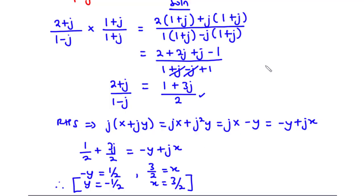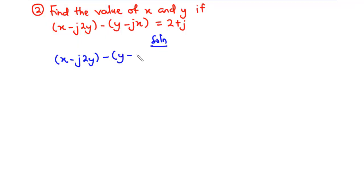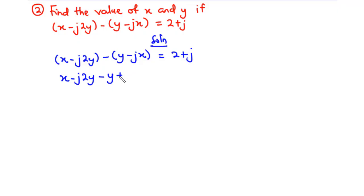Now let's take the second question. Find the value of x and y if (x minus j times 2y) minus (y minus jx) equals 2 + j. Resolving the left hand side, this becomes x minus j times 2y, minus y, plus jx equals 2 + j.